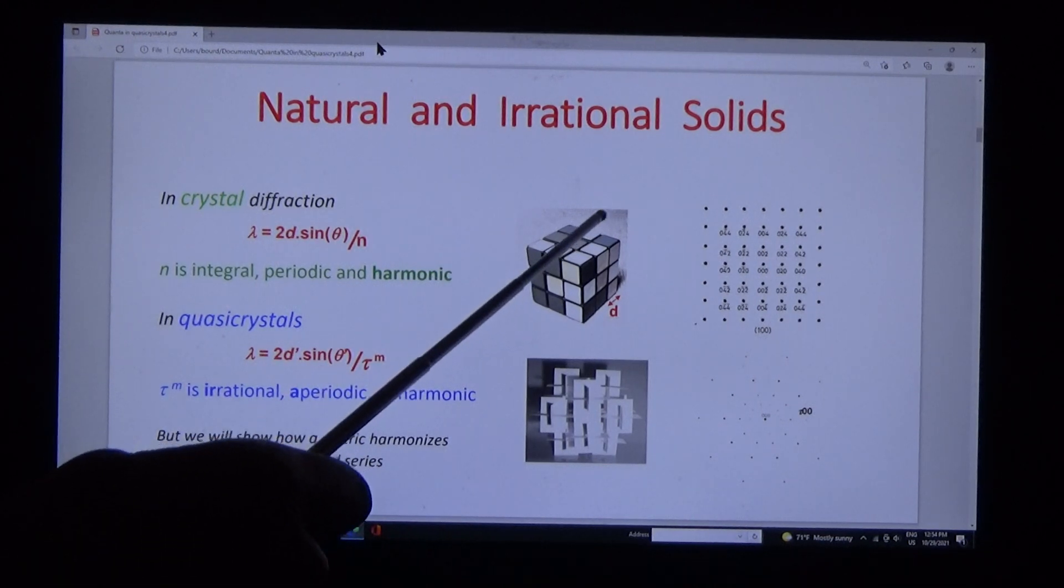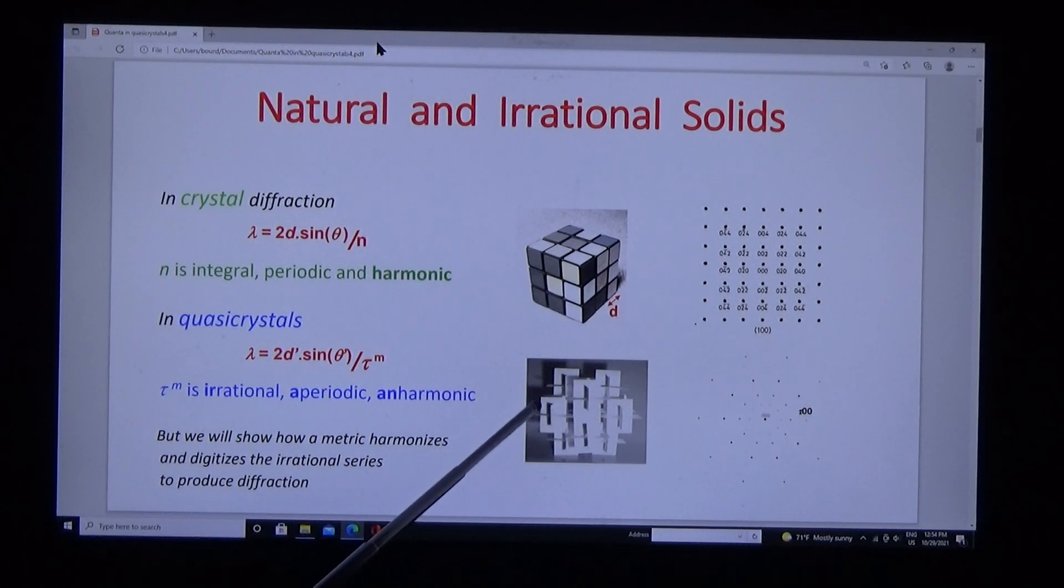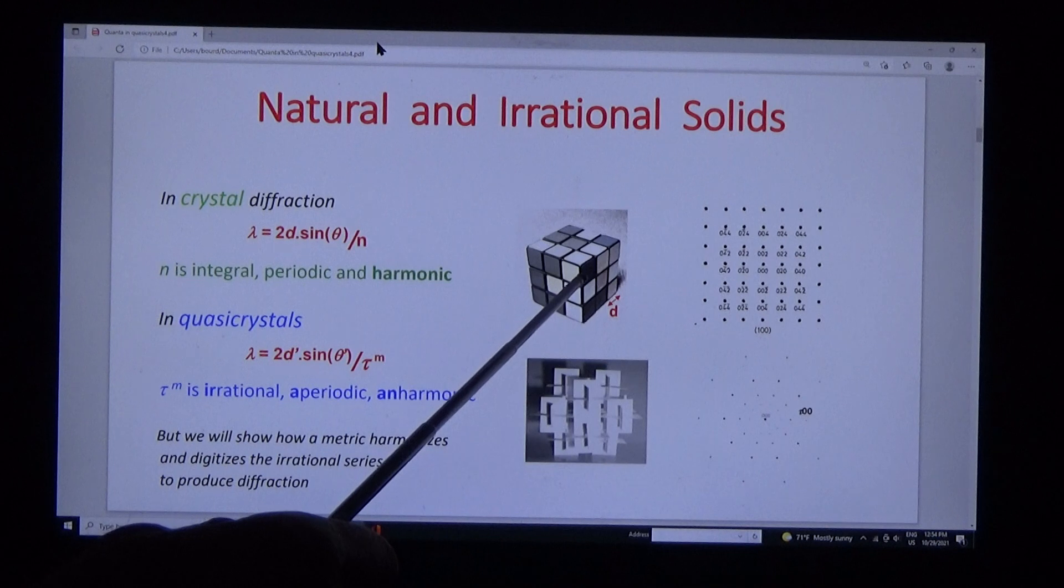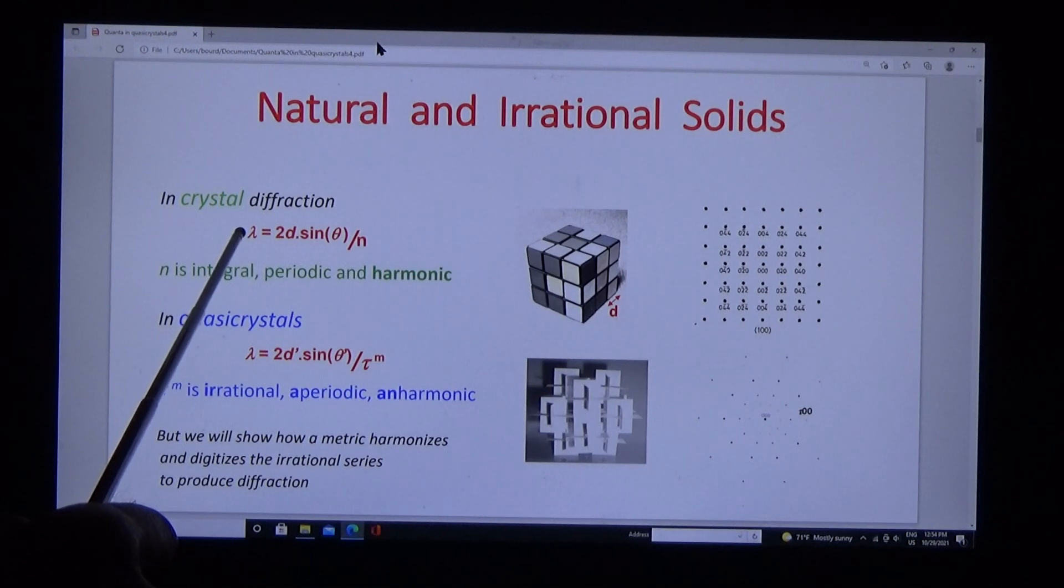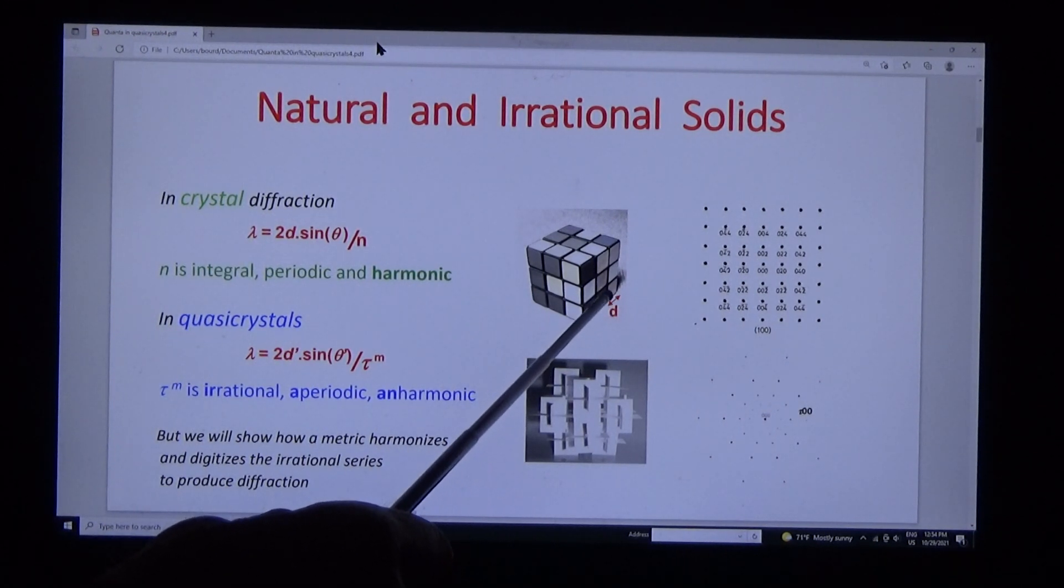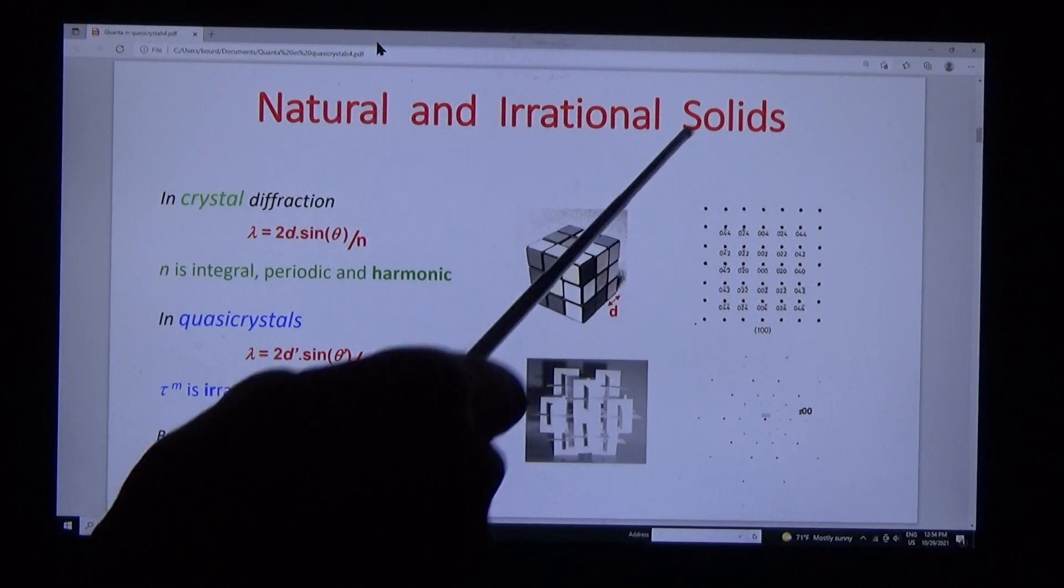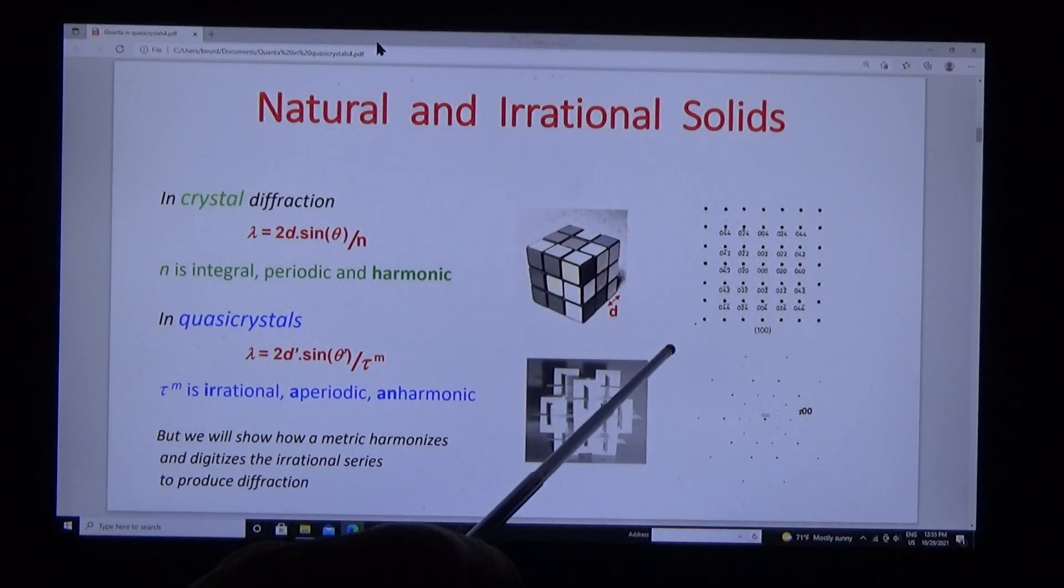I can compare the crystal with the quasi-crystal. Crystals obey Bragg's law: N lambda equals 2d sin theta. Lambda is the wavelength of the probe, d is the interplanar spacing, and theta is half the scattering angle, the Bragg angle.